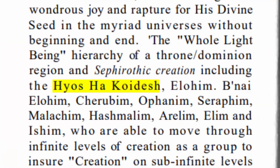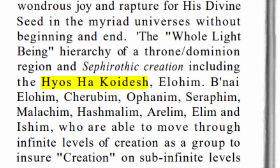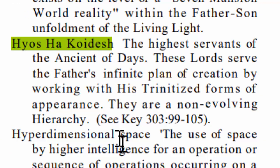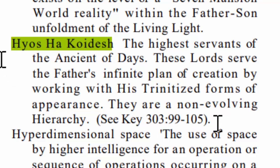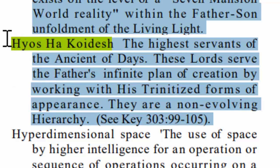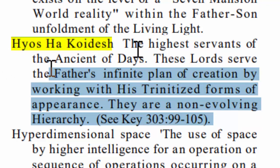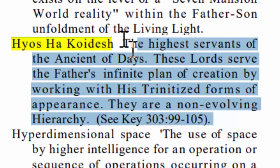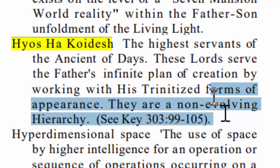Now let's look up this other word — Heos Ha Kodesh. It says: the highest servants of the Ancient of Days, these lords serve the Father's infinite plan of creation by working with his trinitized form of appearance. They are a non-evolving hierarchy. So like we said, in this book we're going to get definitions of the angels — we've always called these beings angels, but here we're going to learn specifically some of their roles, who they are, and the differences between each of them.